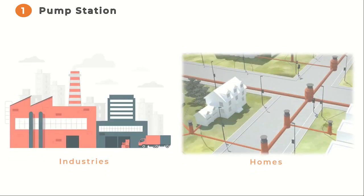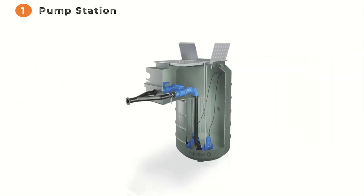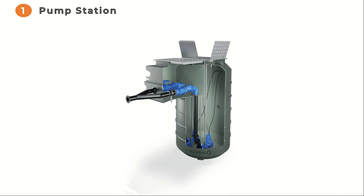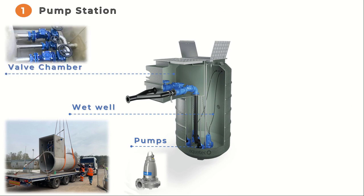The first step in the wastewater treatment process is the pump station. Wastewater is collected from homes and industries through a network of pipes and pumped to the treatment plant. The key elements of every pump station include a wet well, pumps, valve chamber, and other equipment that can be detailed in another video if you're interested.